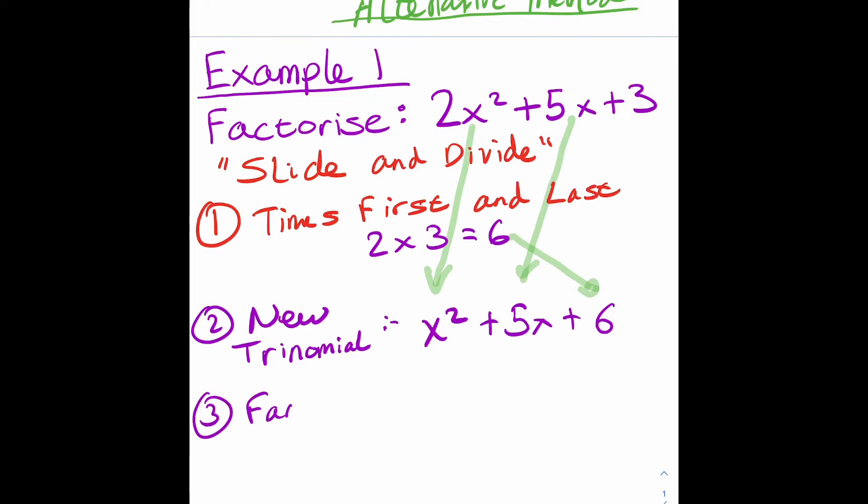Step 3 is just now to factorize that new trinomial with x squared plus 5x plus 6. I'm not going to go through a method for that. It's quite easy. You get x plus 3 and x plus 2.